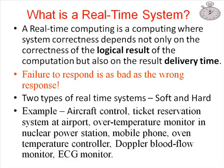What is a real-time system? Real-time computing is computing where system correctness depends not only on the correctness of the logical result but also on the result delivery time. There are two types: soft real-time systems, where tasks are performed as fast as possible but do not have to finish by a specific time; and hard real-time systems, where tasks have to be performed both correctly and on time. Examples include aircraft control, ticket reservation systems, over-temperature monitors in nuclear power stations, mobile phones, oven temperature controllers, Doppler blood flow monitors, and ECG monitors.